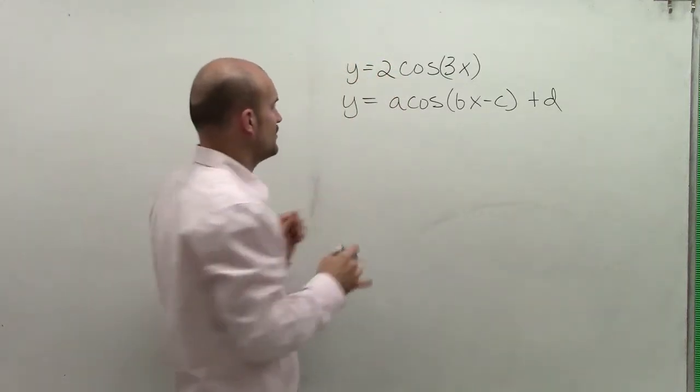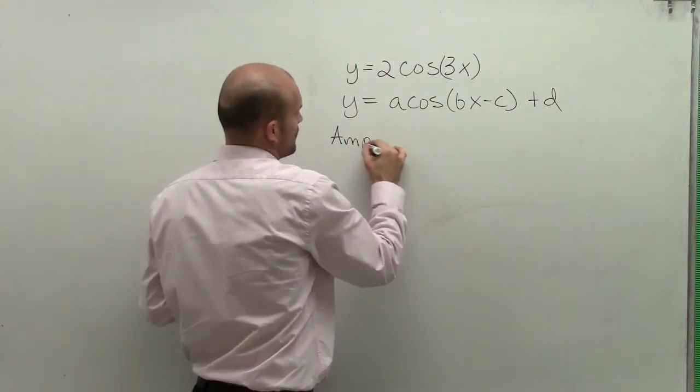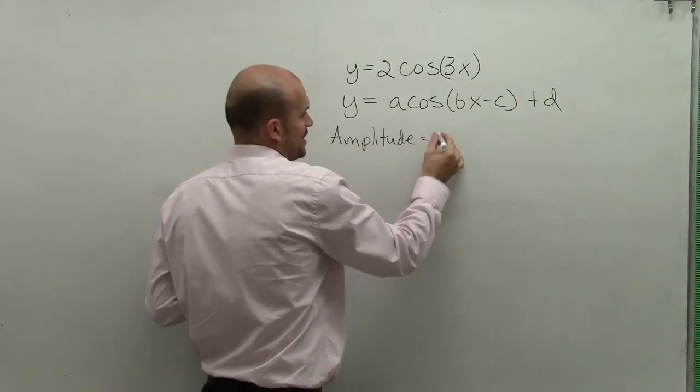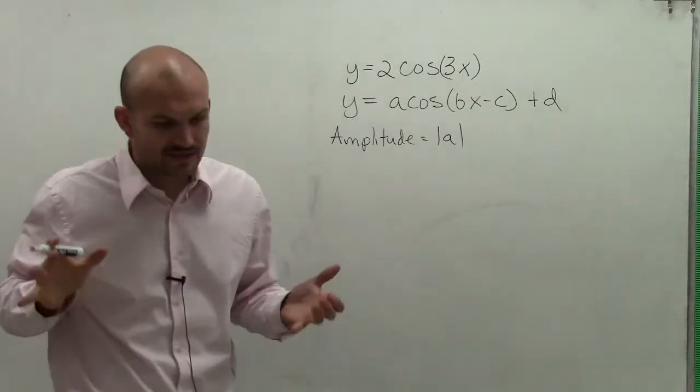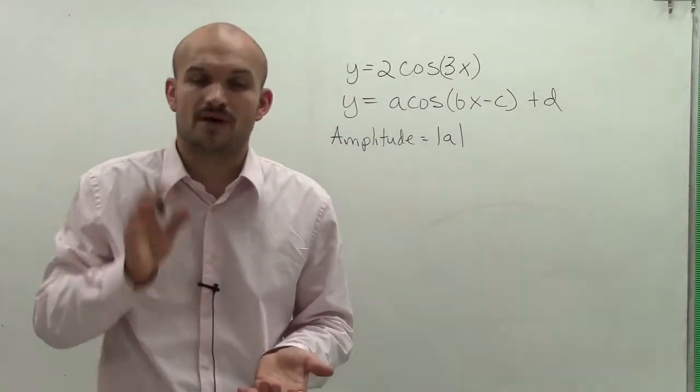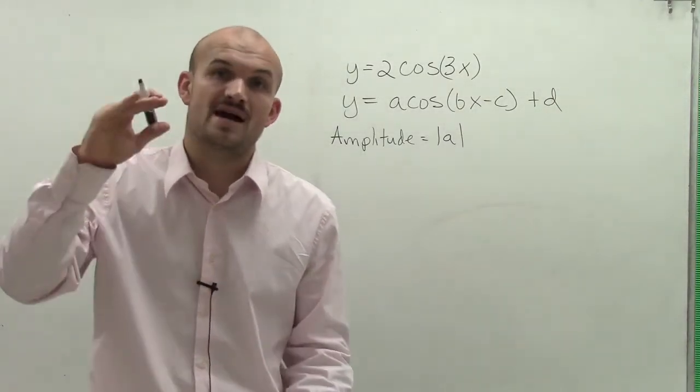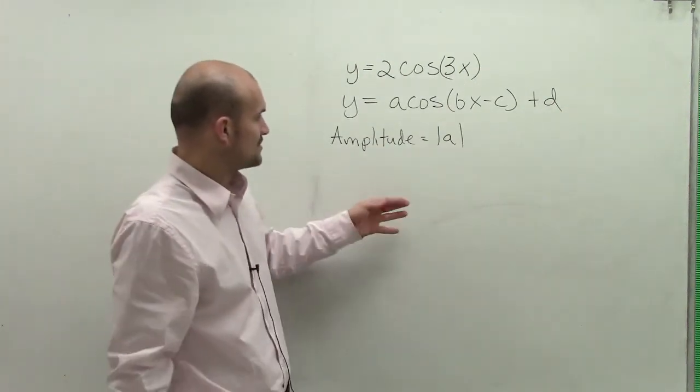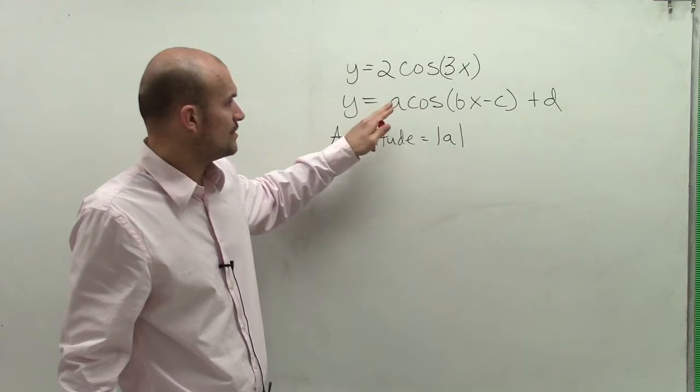And what we remember was the amplitude, remember that was going to deal with your absolute value of a. So remember when dealing with the definition of amplitude, remember amplitude was the half distance between your maximum and your minimum of your graph. So to find the amplitude, we took the absolute value of our a.